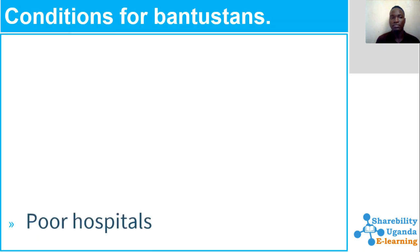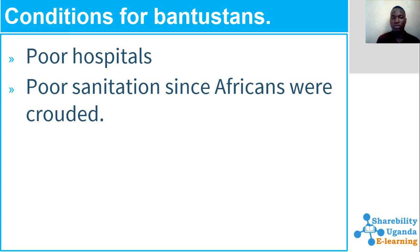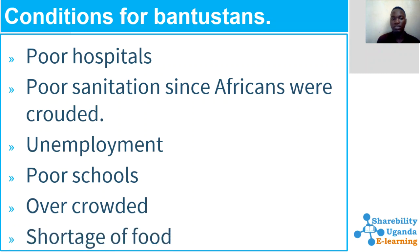We are now going to look at the conditions of the Bantu stances — the homes of the blacks. These areas were overcrowded with a lot of diseases. Poor hospitals existed since the system under which they ran was decentralized. Much of the capital was invested into Dutch hospitals rather than African hospitals, resulting in poor hospitals, poor sanitation, unemployment, overcrowded schools, and shortage of food.